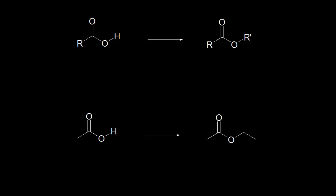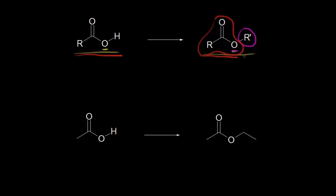Esters are another kind of carboxylic acid derivative. If we started with a generic carboxylic acid on the left, we could turn that into an ester on the right. Since we're not concerned with mechanisms and reactions in this video, we don't need to worry about details like which oxygen is which — it depends on how you're making the ester. All we're concerned about is how to name the ester. The first thing you do is look at the R' group on the oxygen and name it as an alkyl group. Then you look at the carboxylic acid portion to name the rest of the ester.